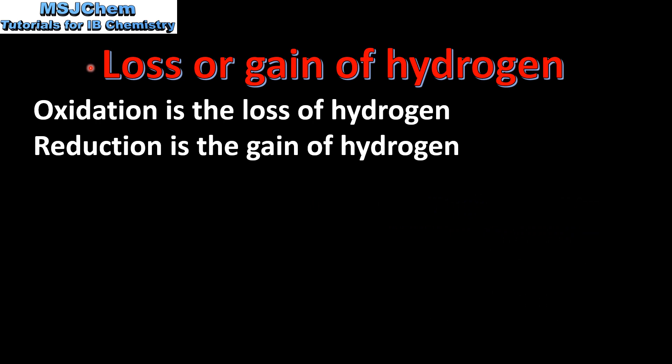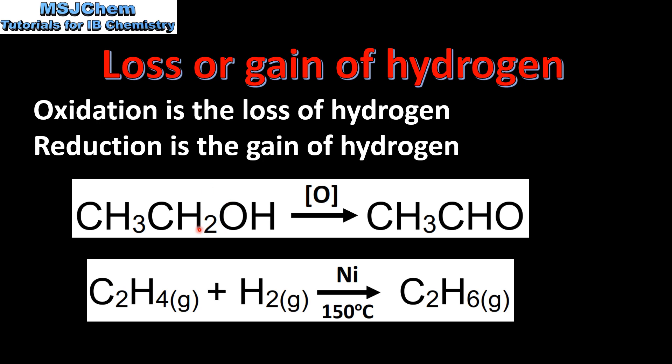Finally we have the loss or gain of hydrogen. Oxidation is the loss of hydrogen and reduction is the gain of hydrogen. In this reaction we have ethanol being oxidized to form ethanal. The oxidizing agent is acidified potassium dichromate and the ethanol is losing hydrogen which is oxidation.